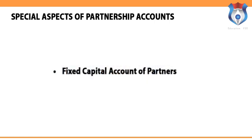Fixed capital account of partners: this method keeps the partners' capital contribution in the books at a constant figure throughout the year. Under this method, two accounts are maintained — one showing the original capital of the partners without any change throughout the year, and another account called the partners' current account, which records transactions such as salary, commission, bonus, interest on capital, and drawings made by the partners.